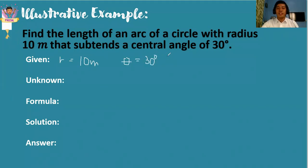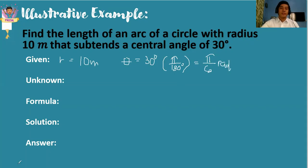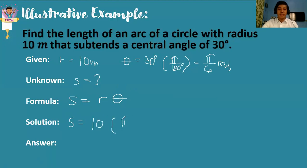As mentioned, 30 degrees must be converted into its radian measure. So we need to multiply it by pi over 180 degrees. Simplifying the fraction, we will get pi over 6 radians. For the unknown value, we are looking for the arc length. The formula is s is equal to the radius times theta in radians. For the solution, simply replace the values: we have 10 times pi over 6 radians. Simplifying the values, we will have 10 pi over 6, or the lowest term is 5 pi over 3 meters.